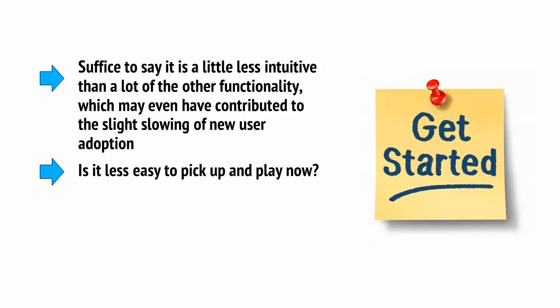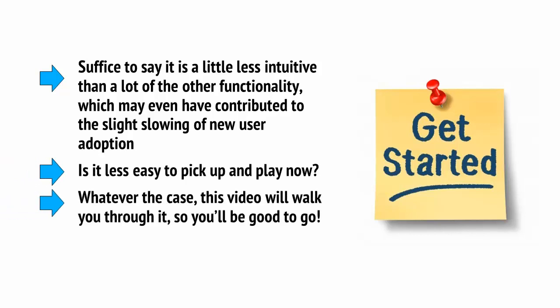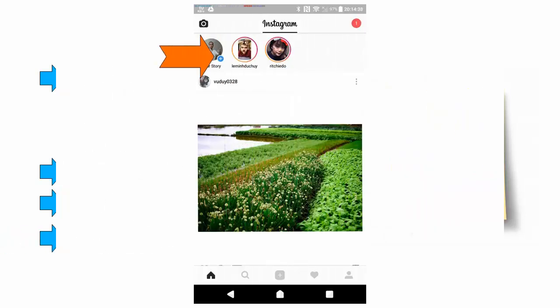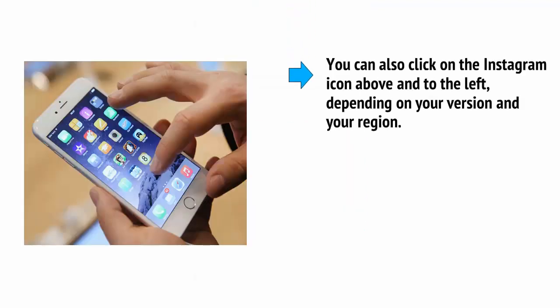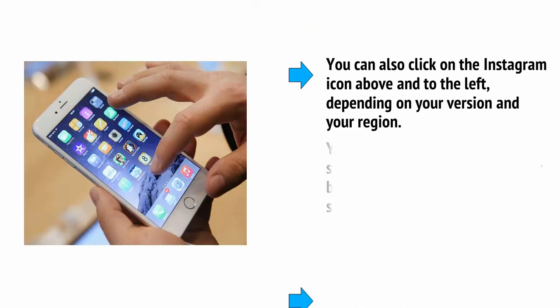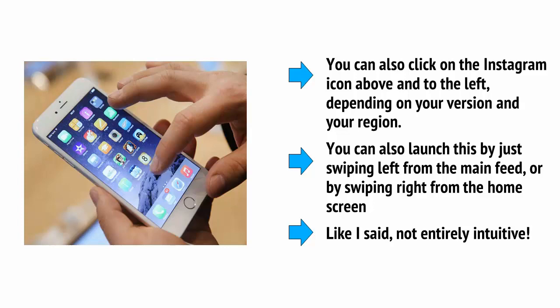Is it less easy to pick up and play now? Whatever the case, this video will walk you through it, so you'll be good to go. To get started, right-click on the plus icon that is found at the top left of the home screen. This will be next to the other Stories, and it will say My Story next to it with your profile image. You can also click on the Instagram item above and to the left, depending on your version and your region. You can also launch this by just swiping left from the main feed or by swiping right from the home screen. Like I said, not entirely intuitive.